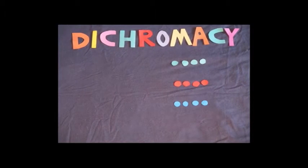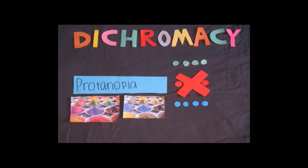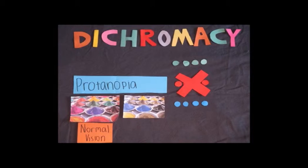Protanopia is the absence of red cones. People with a red deficiency can't see red light, and blues and yellows stand out to them. They see the world in a similar way to deuteranopes.